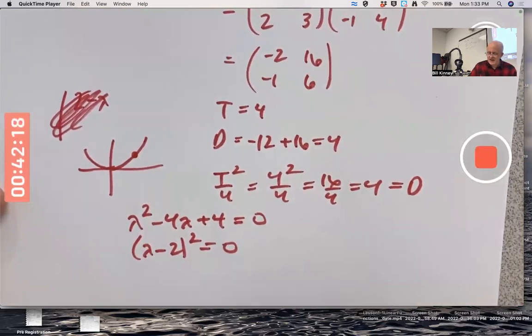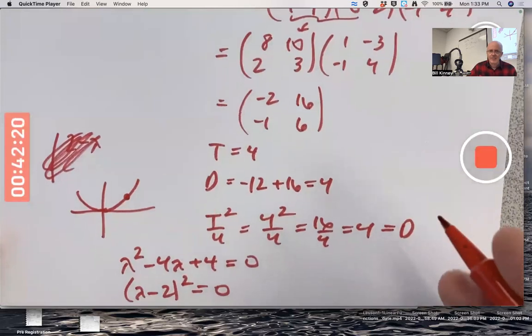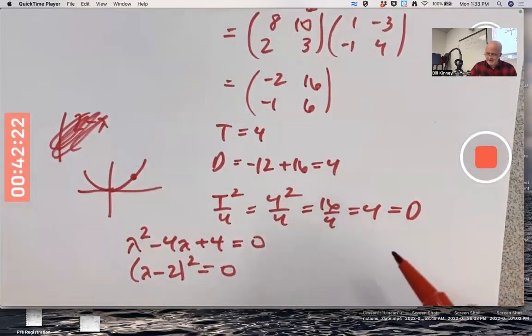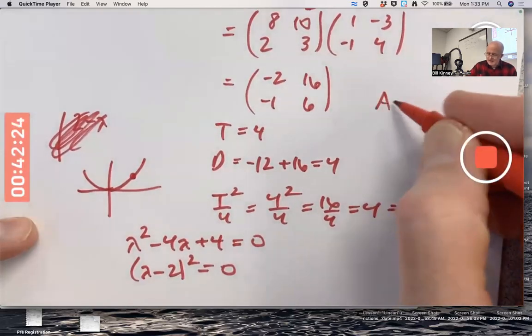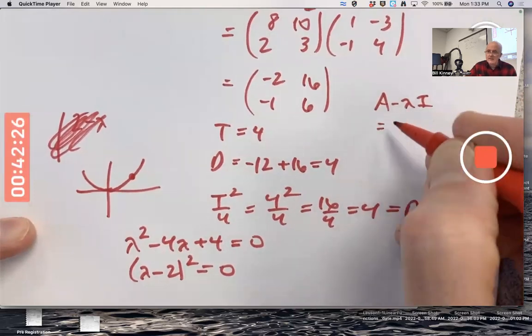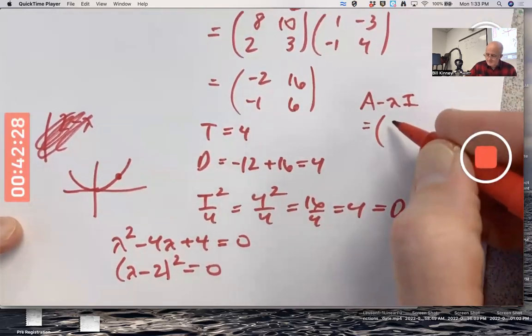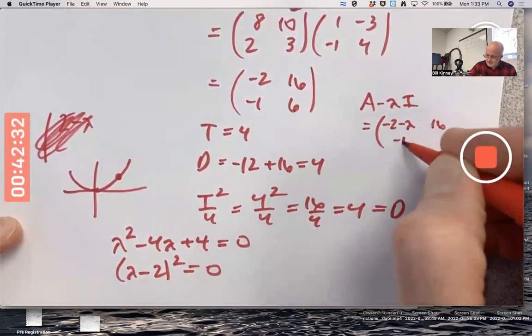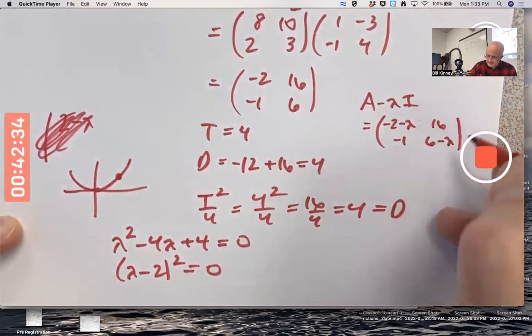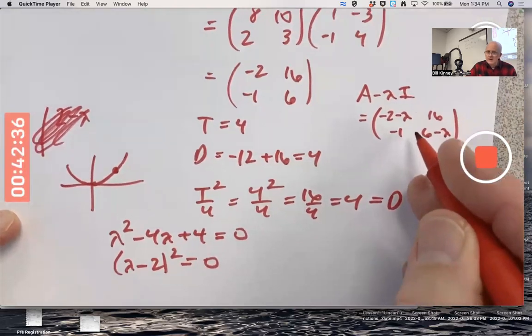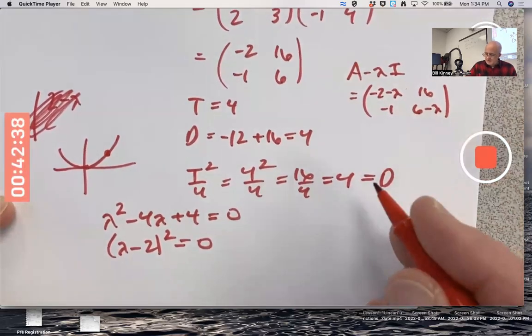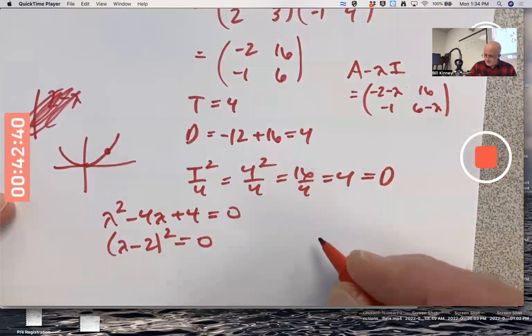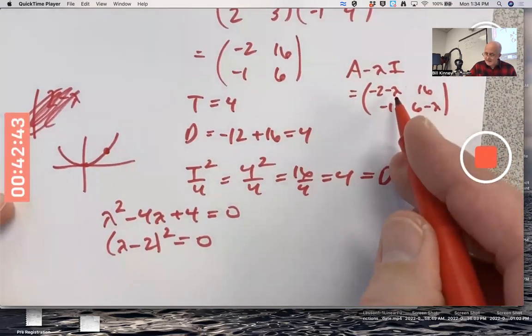Let's go ahead and find eigenvectors. I need to think about A minus lambda I here. I'm going to find the eigenvectors. Negative two minus lambda, sixteen, negative one, and six minus lambda. Replace lambda with two.